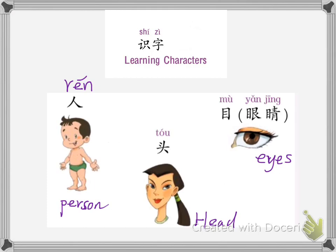The first one is person. The pronunciation in Chinese for person is ren... ren. The writing is like this. This is the first stroke, and this is the second stroke.